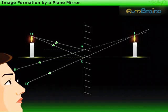Since the reflected rays do not actually meet at I, but only appear to meet, we say that a virtual image of the object at point O is formed at I. This image cannot be obtained on a screen.